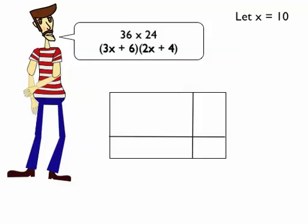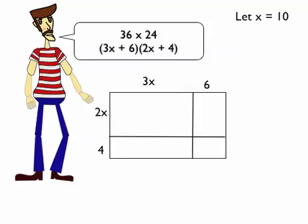Alright, 3x and 6 go along the top, and then the terms 2x and 4 go on the side, so I have each number on each side.